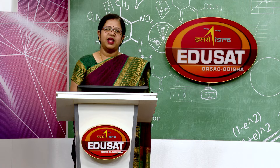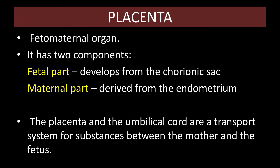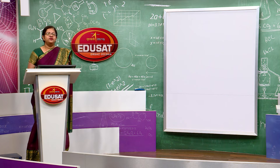Now let us discuss what the placenta is. As already mentioned, it is a fetomaternal organ. It consists of parts from both the fetus and the maternal endometrial lining. It has two components: the fetal part and the maternal part. The fetal part develops from the chorionic sac, and the maternal part is derived from the endometrium. The placenta and the umbilical cord act like a transport system for substances between the mother and the fetus.